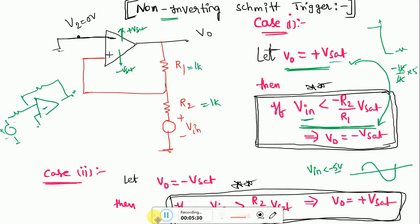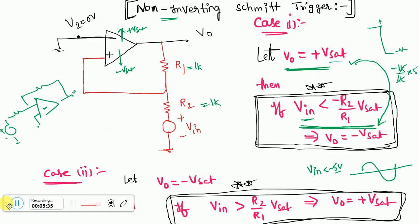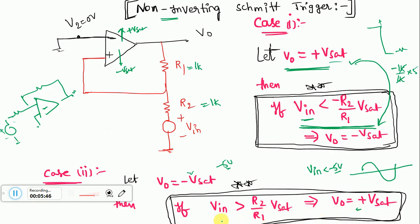Now again if you look here, if you assume initially it has minus Vsat, that is minus 5 volts. Then to convert from minus Vsat to plus Vsat, the necessary condition is the Vin should be greater than R2 by R1 into Vsat, that is 1K by 1K into 5 volts, that is plus 5. But the input is varying from plus 1 to minus 1. So there is no possibility of changing from minus Vsat to plus Vsat if it is initially in minus Vsat.